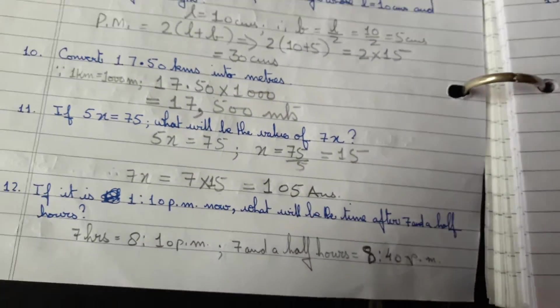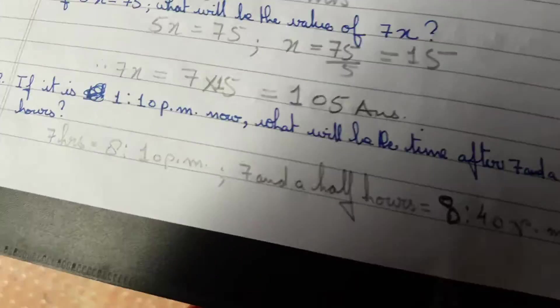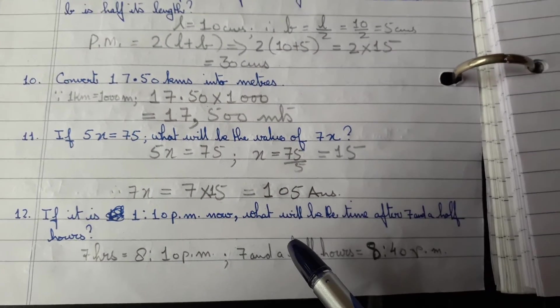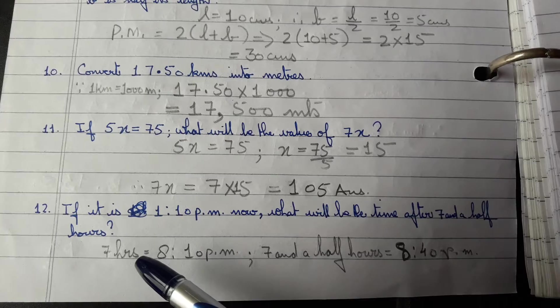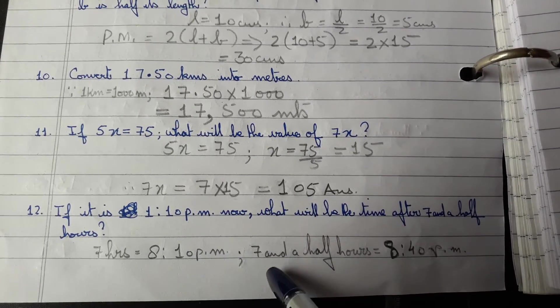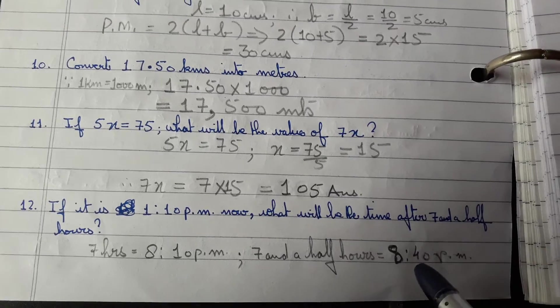If it is 1:10 PM right now, what will be the time after 7 and a half hours? So 7 hours, it will be 8:10 PM, right? And 7 and a half hours plus 30 is 8:40 PM.